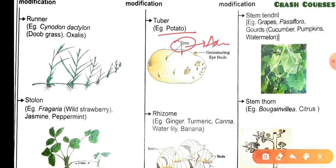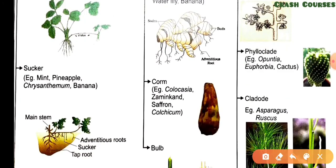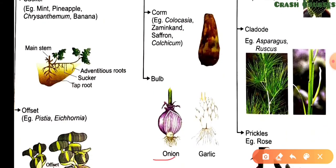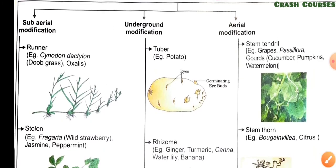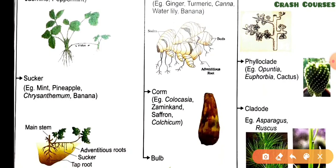Next, tuber — example is potato; the eyes are axillary buds and they represent nodes. Rhizome — remember mainly ginger and turmeric. Corm — remember Colocasia and Zaminkand mainly. Bulb — remember onion and garlic. For aerial modifications: stem tendril — remember grapes and gourds (cucumber, pumpkin, watermelon). Stem thorn — Bougainvillea and Citrus. Phyloclade — Opuntia (flat stem) and Euphorbia (fleshy cylindrical). Cladode — Asparagus. Prickles — rose.